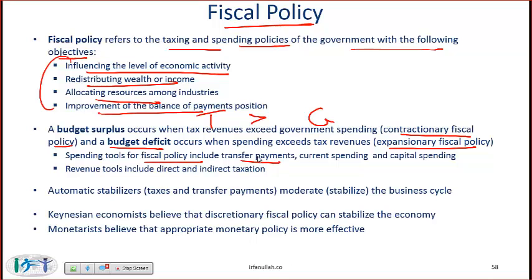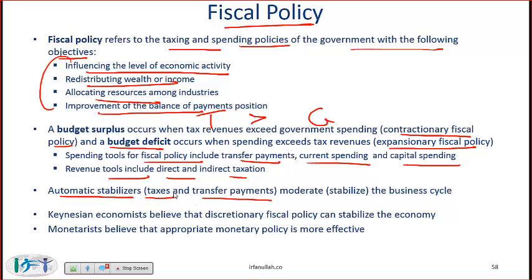The spending tools for fiscal policy include transfer payments — government giving money to its citizens — and spending on various projects or larger capital spending on infrastructure. Revenue tools include direct and indirect taxation. One fiscal policy tool is automatic stabilizers, which moderate the business cycle automatically. Examples of automatic stabilizers are taxes and transfer payments.